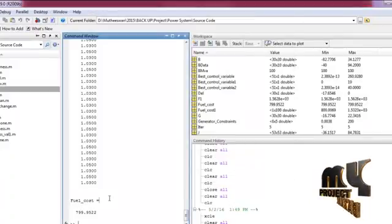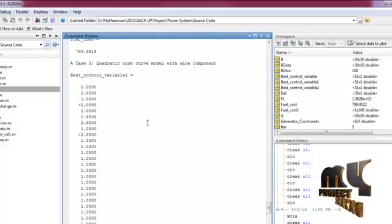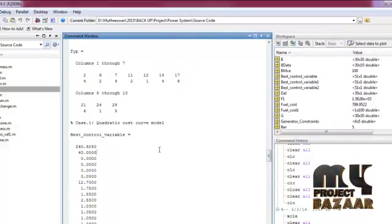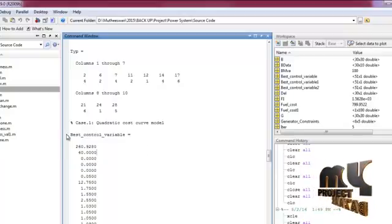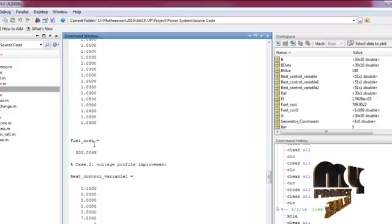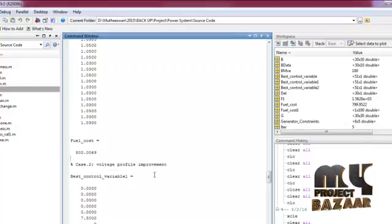There are three cases implemented. One is quadratic cost curve model. In this, we got the best control variable and finally we obtained the fuel cost values.